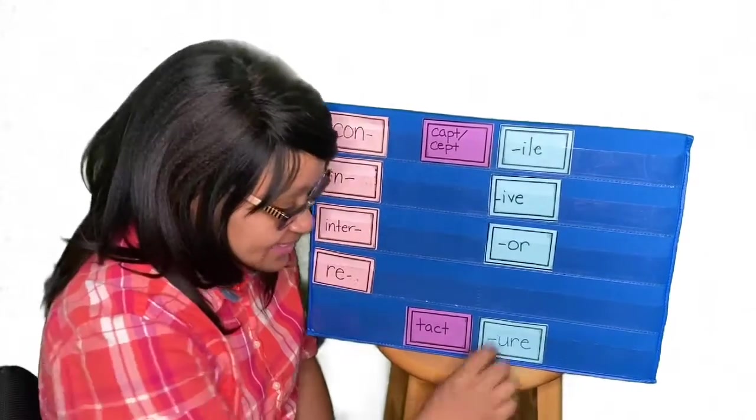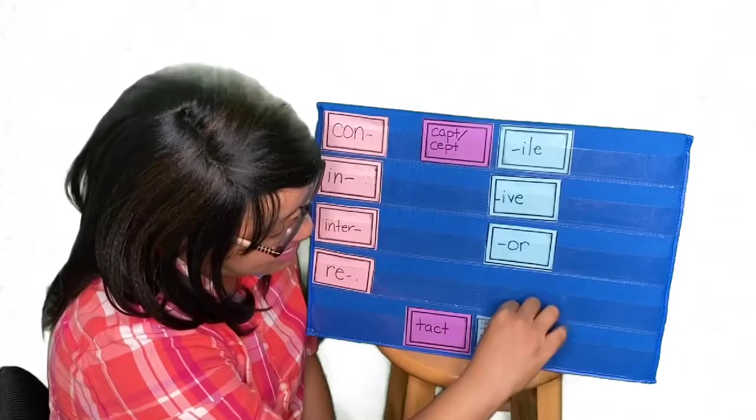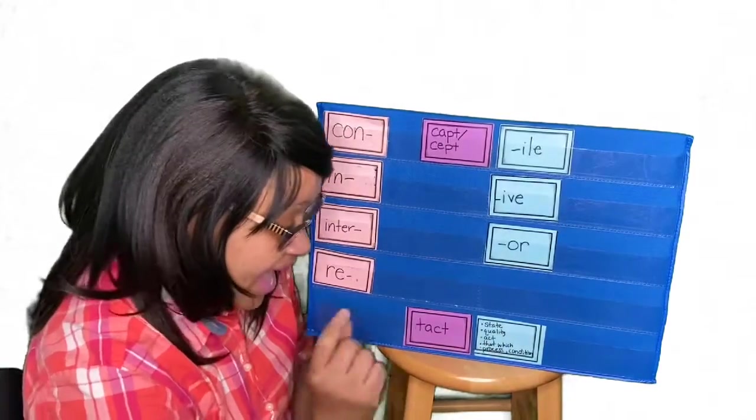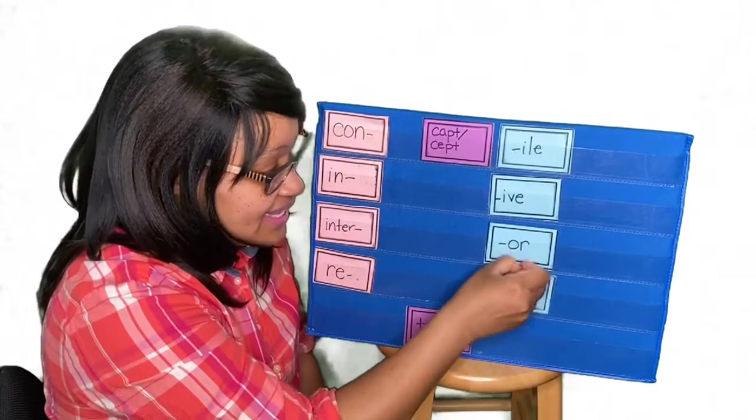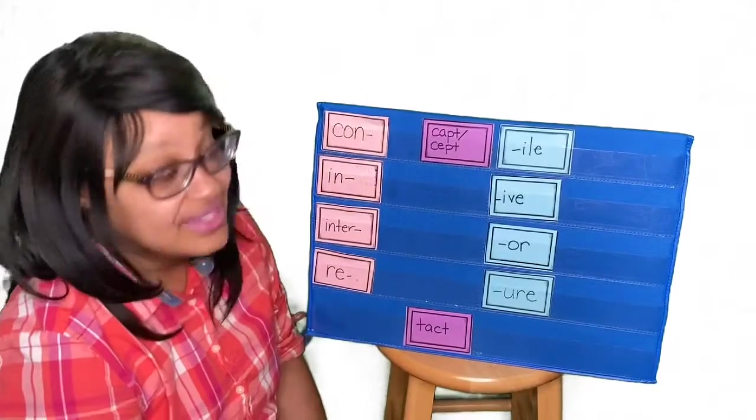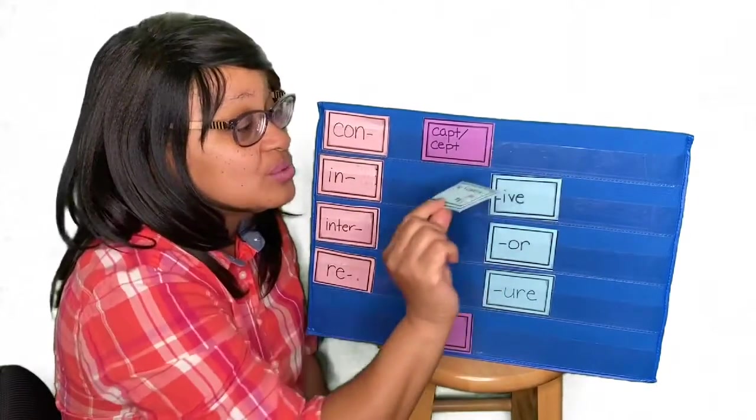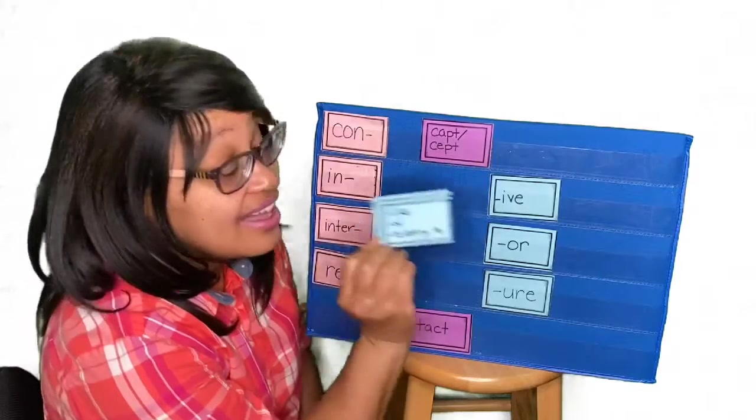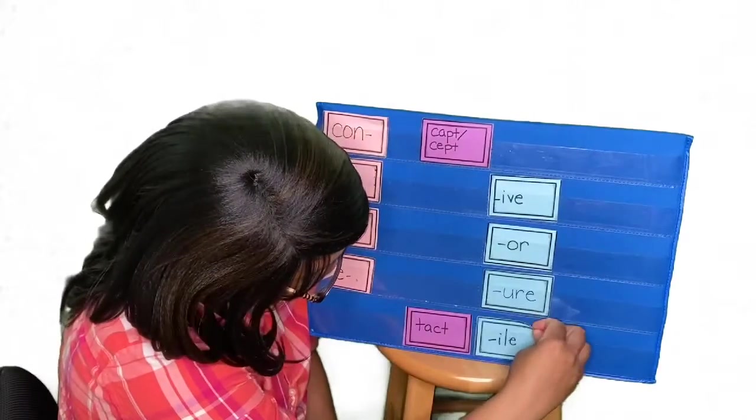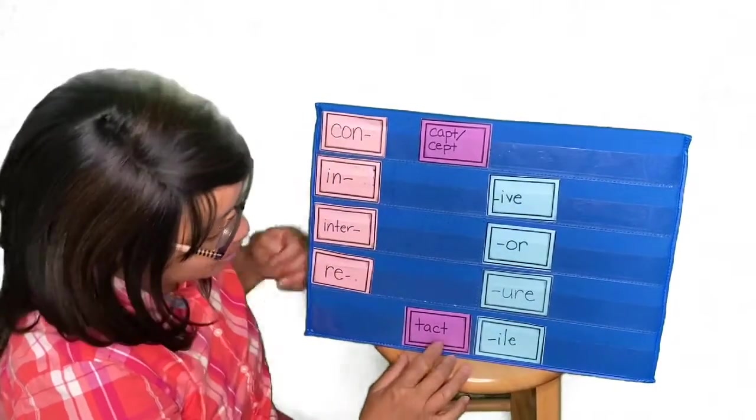Tacture. Hmm. That doesn't really make too much sense. And that's state, quality, or act. But we need of or relating to the sense of touch. And -al was the only one that was like of or relating to. So, that means our new word would be tactile.